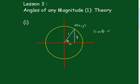The sine of Theta equals the opposite over the hypotenuse, which is just Y on 1, or just Y. Cos of Theta is the adjacent over the hypotenuse, which is X on 1, or just X. And the tan of Theta is equal to the opposite over the adjacent, which is Y on X.